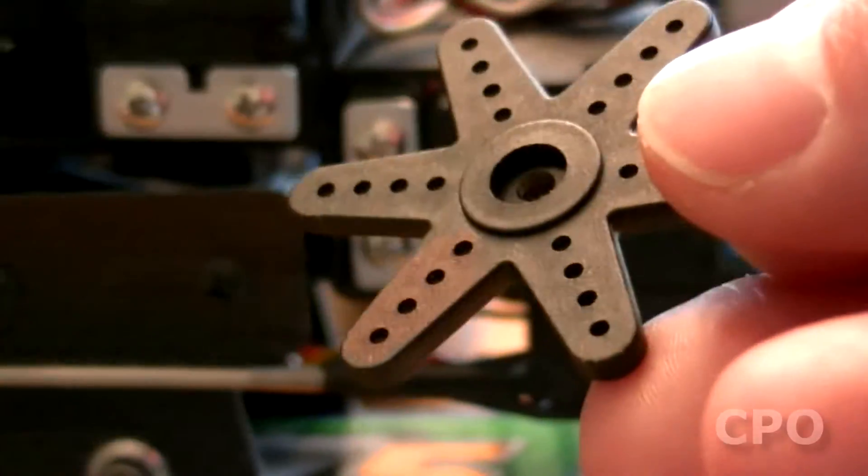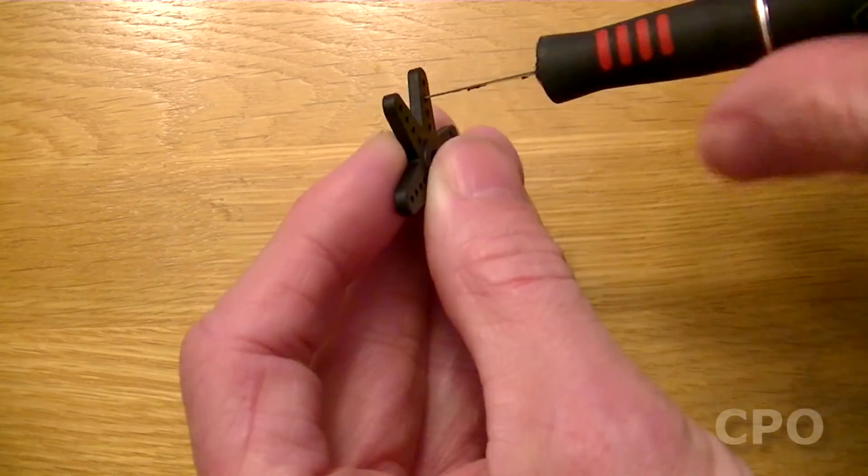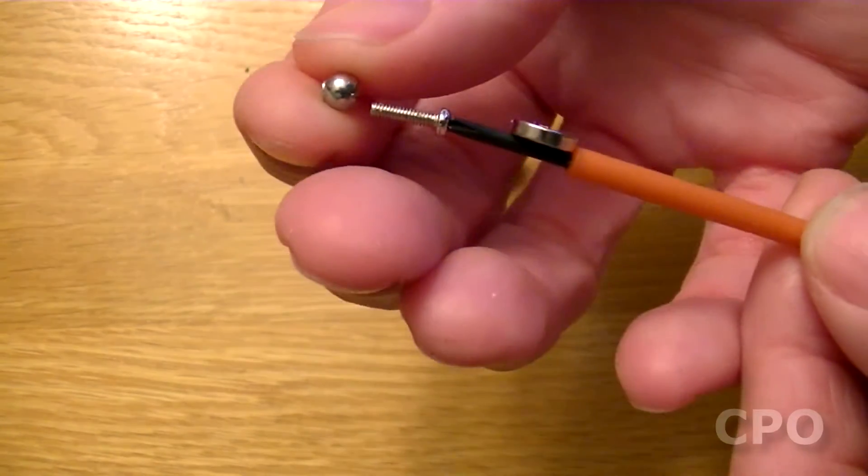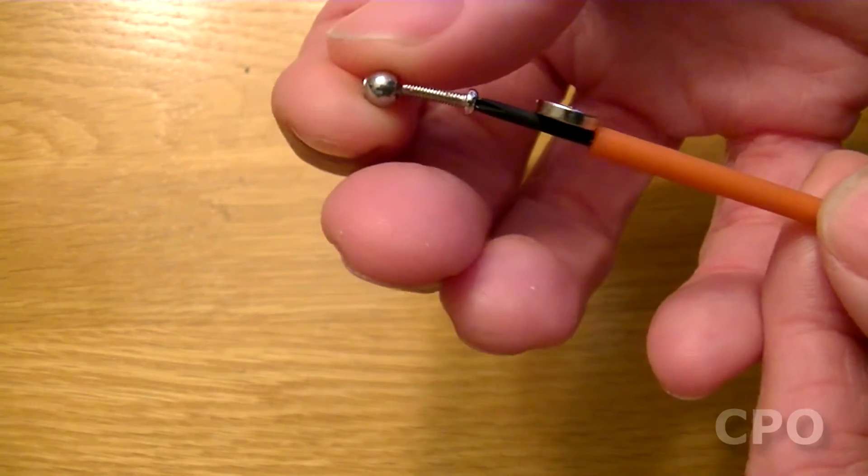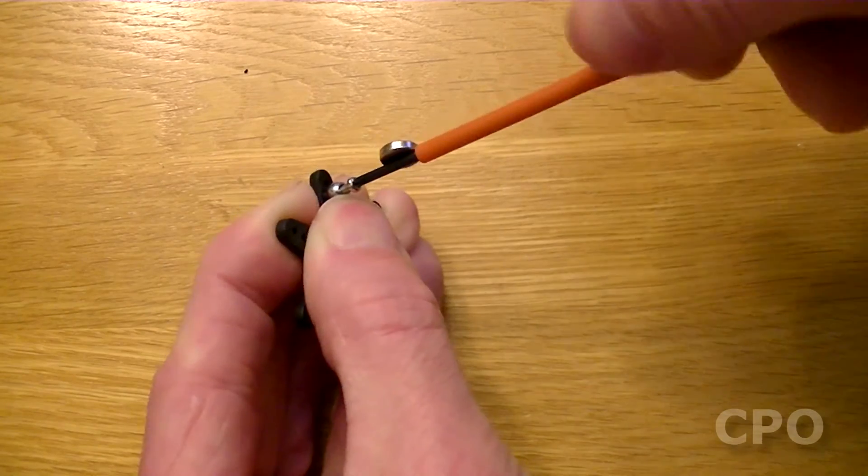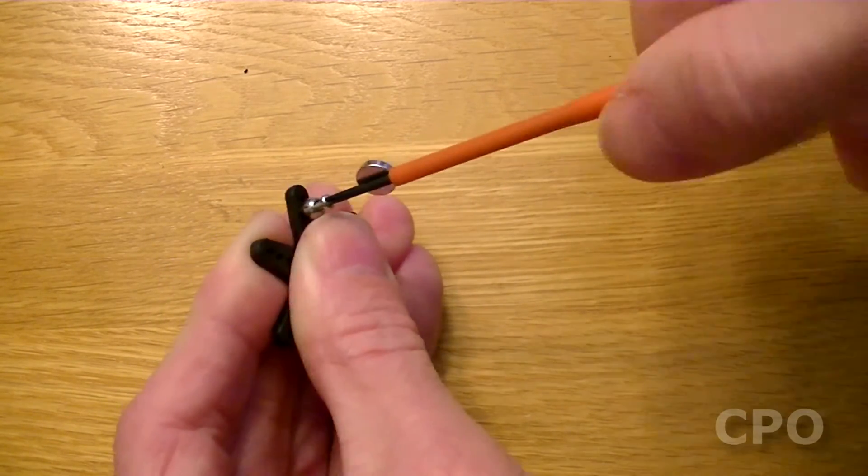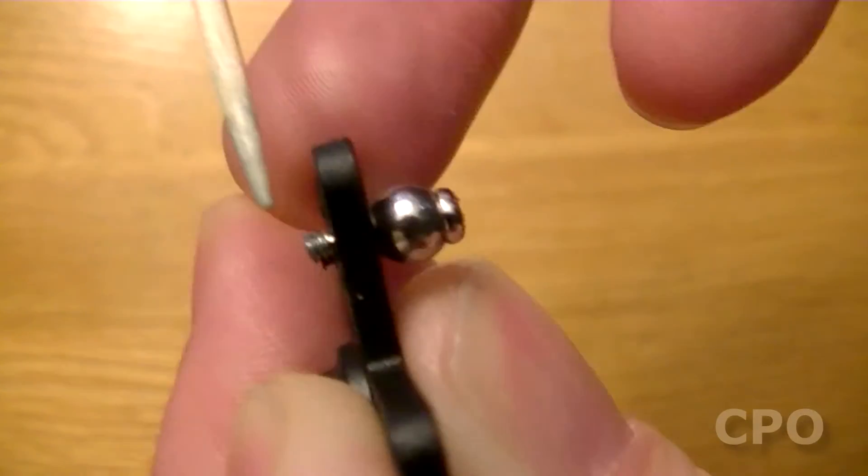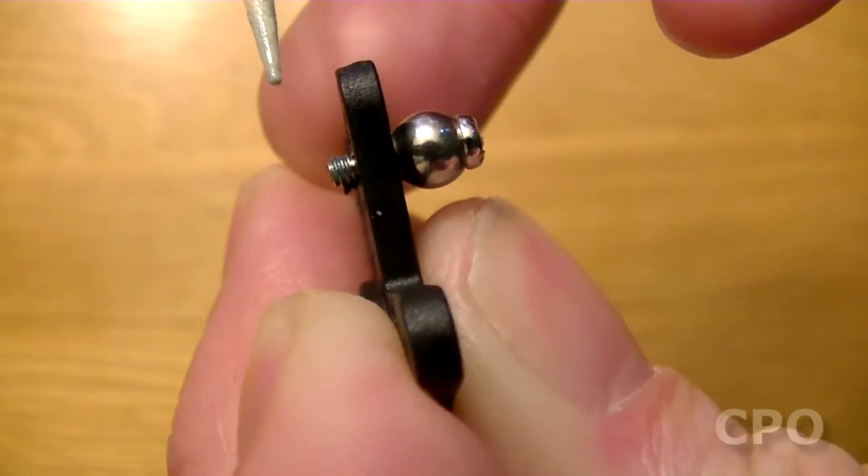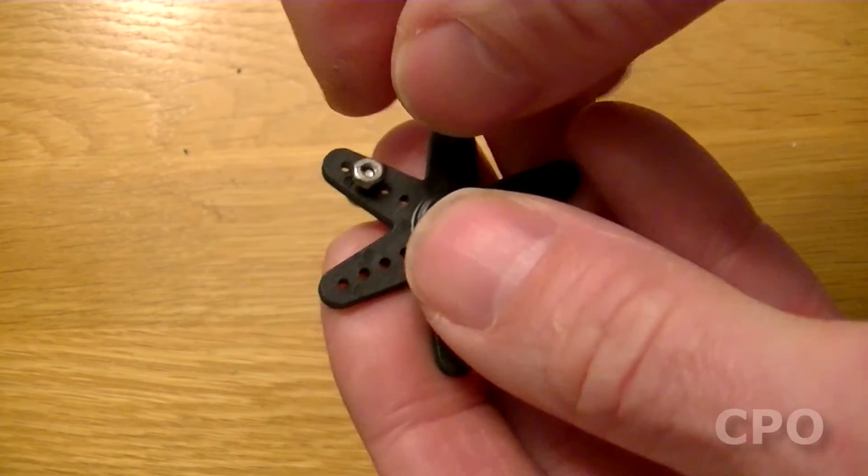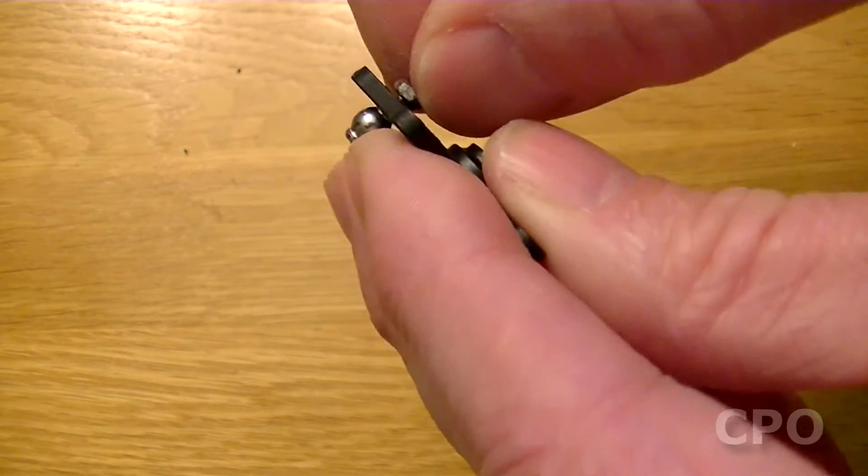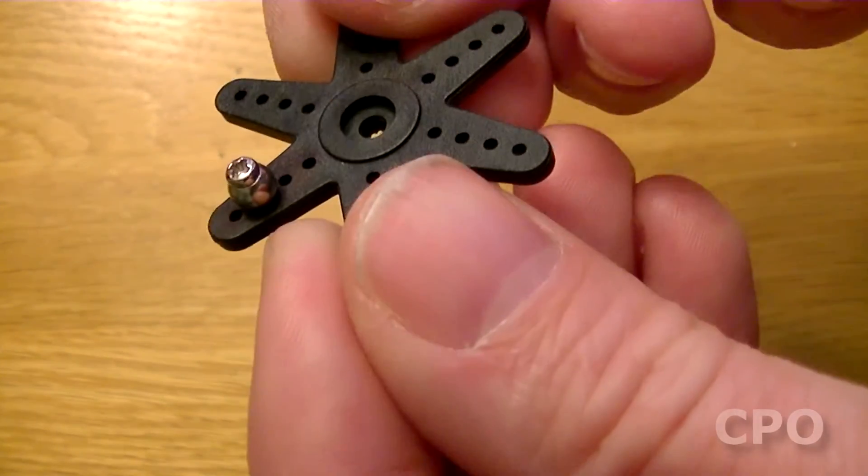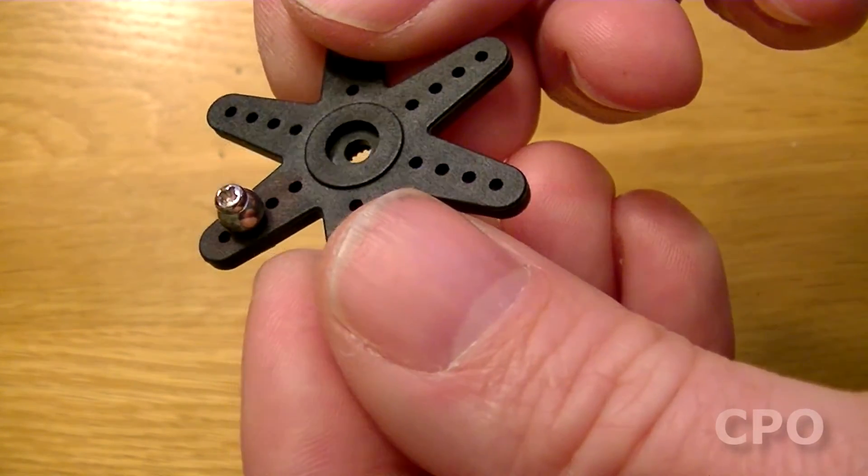So I'm going to use the second hole from the end on the servo horn, and I'm going to try that because I think that's going to be a good place to start. But the reality of it is I may change that up later as I get further into the setup, because how much travel I have is going to be dependent upon which hole I'm using, as well as resolution and speed. I'm not going to get into a whole lot of that in this video, but just note that I'm going to start with the second hole from the outside edge to start with.